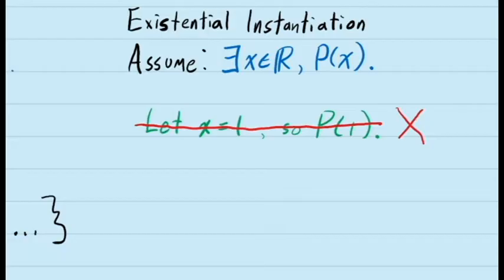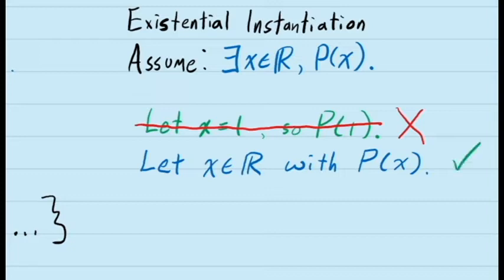In other words, if we assume there is at least one value of x with a certain property, we can introduce a line into our proof that says something like: let x represent a real number that has this property. When we do this, the value of x has to remain unknown. We can't assign a value to x, because the statement that there is a value of x doesn't tell us what that value of x is. To see how this works in practice, let's look at an example.